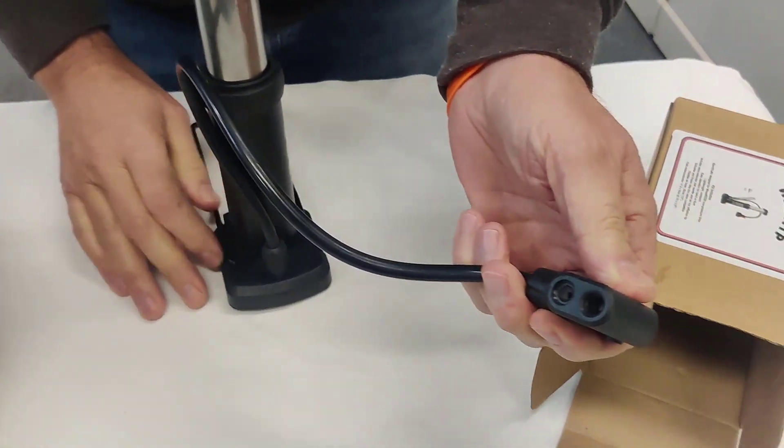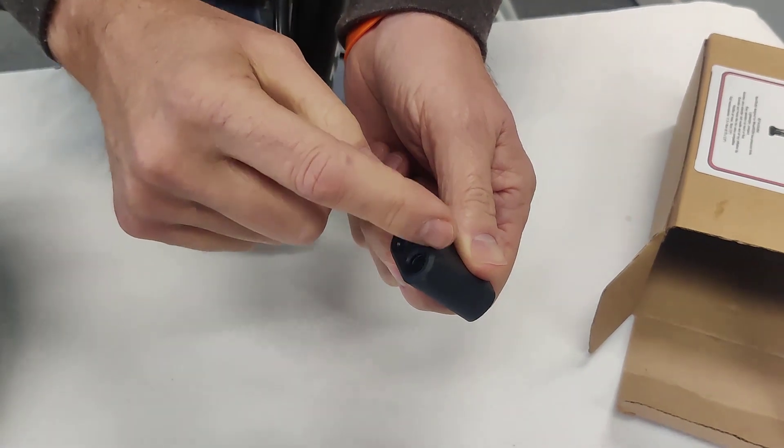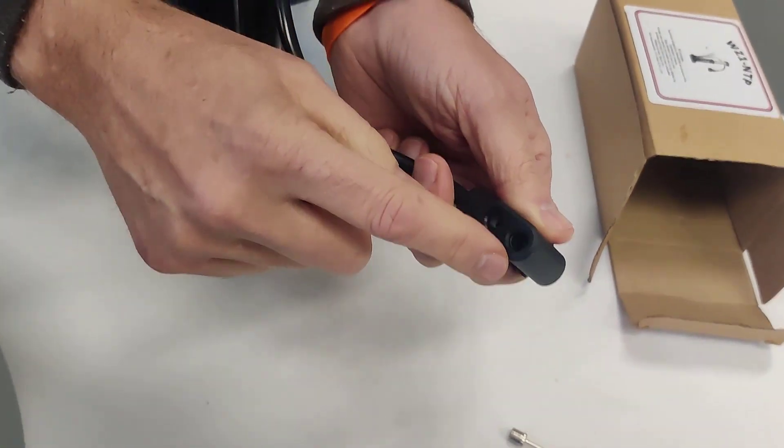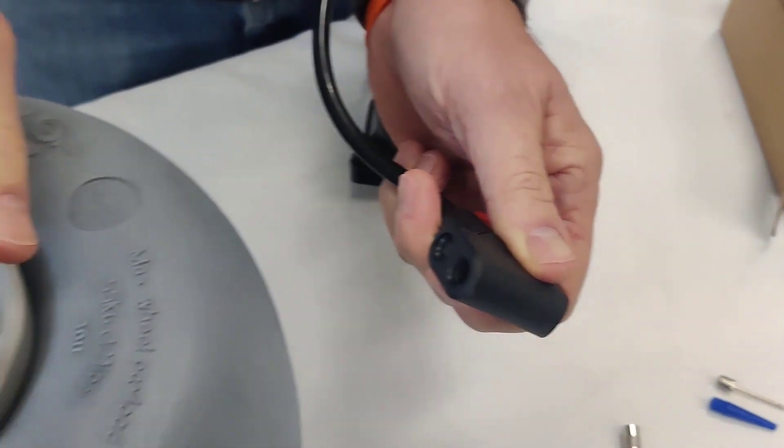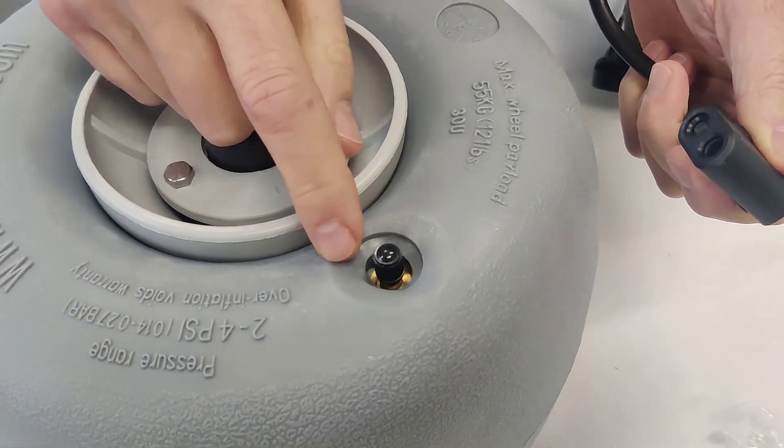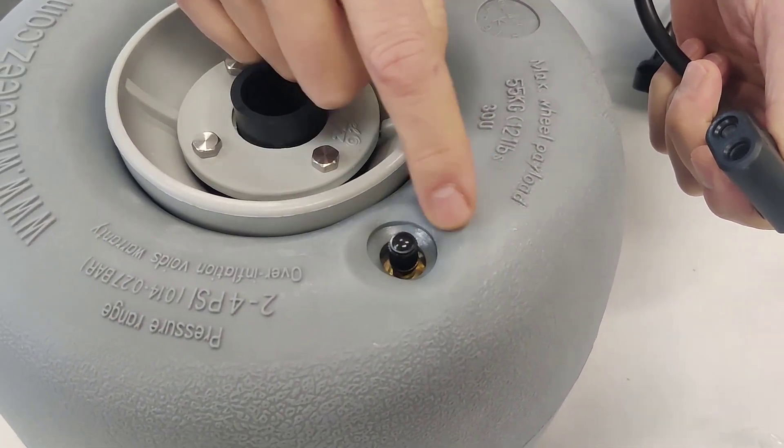Because this has an oblong oval air chuck, it's not necessarily going to fit down into the valve well of the Wheelie's tire.